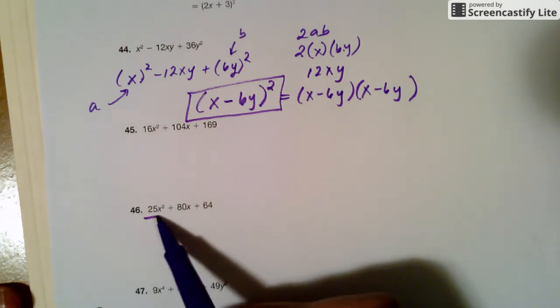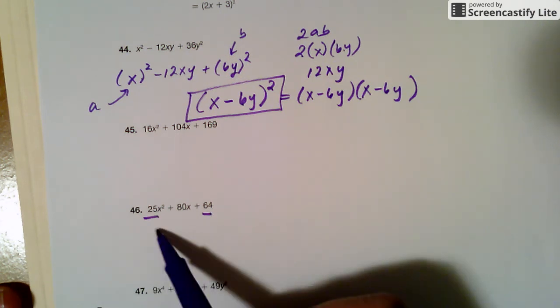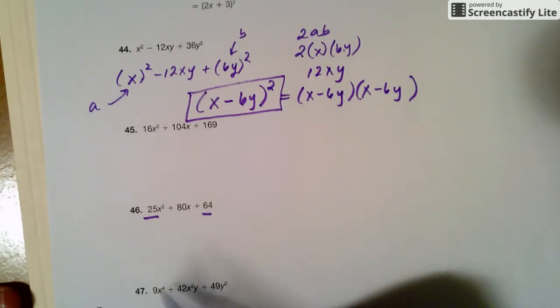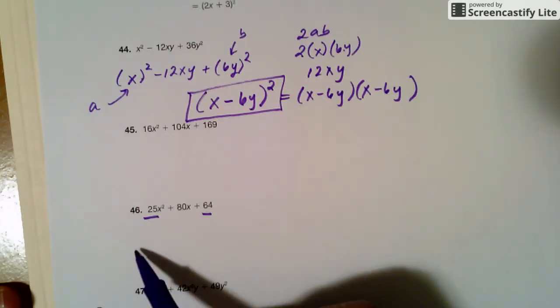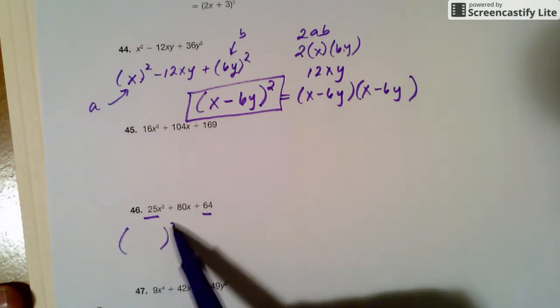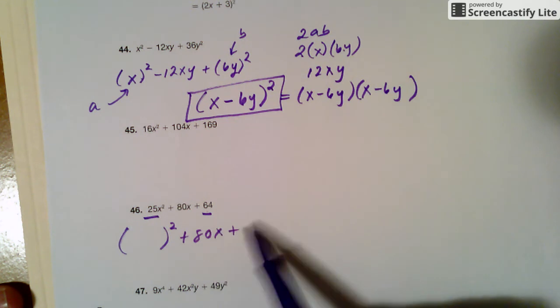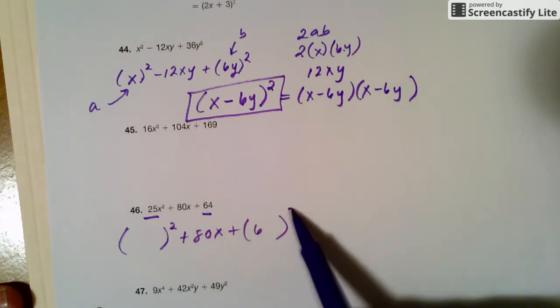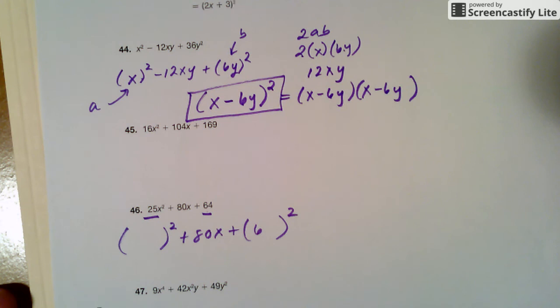So first thing is I look at this. And, well, there's three terms. So it's a trinomial. And then the first in that term, 25 is a perfect square number. 64 is a perfect square number. So I can write it as blank square plus 80x plus blank square at that spot.